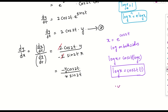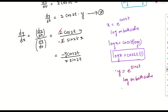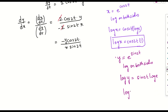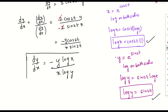Similarly, for y = e^(sin 2t), applying log on both sides gives log y = sin 2t · log e = sin 2t. Substituting back, dy/dx = -(log x · y) / (x · log y). This is our final answer for Method 1.